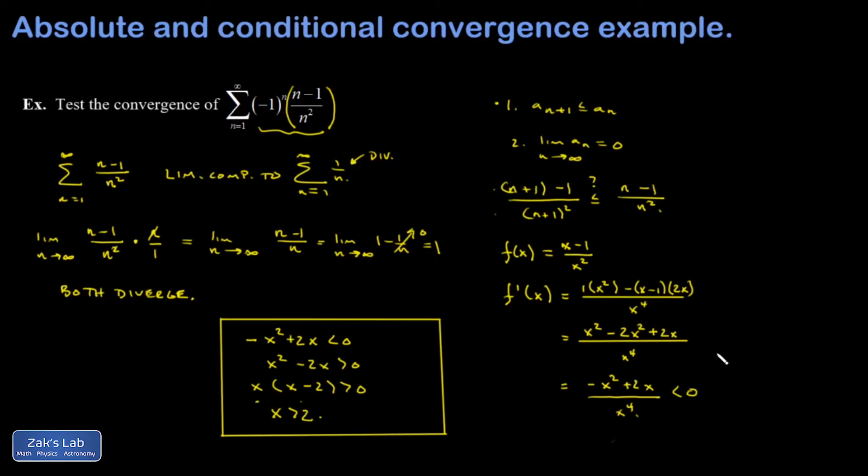So provided x is bigger than 2, this derivative is going to be less than zero. This is a decreasing function as long as we're past two, and that's totally fine for issues of convergence to have exceptions to the rule early in the sequence as long as it then settles down for the long run. So we showed the derivative is eventually negative and it stays that way, and that verifies that a_(n+1) is less than or equal to a_n.